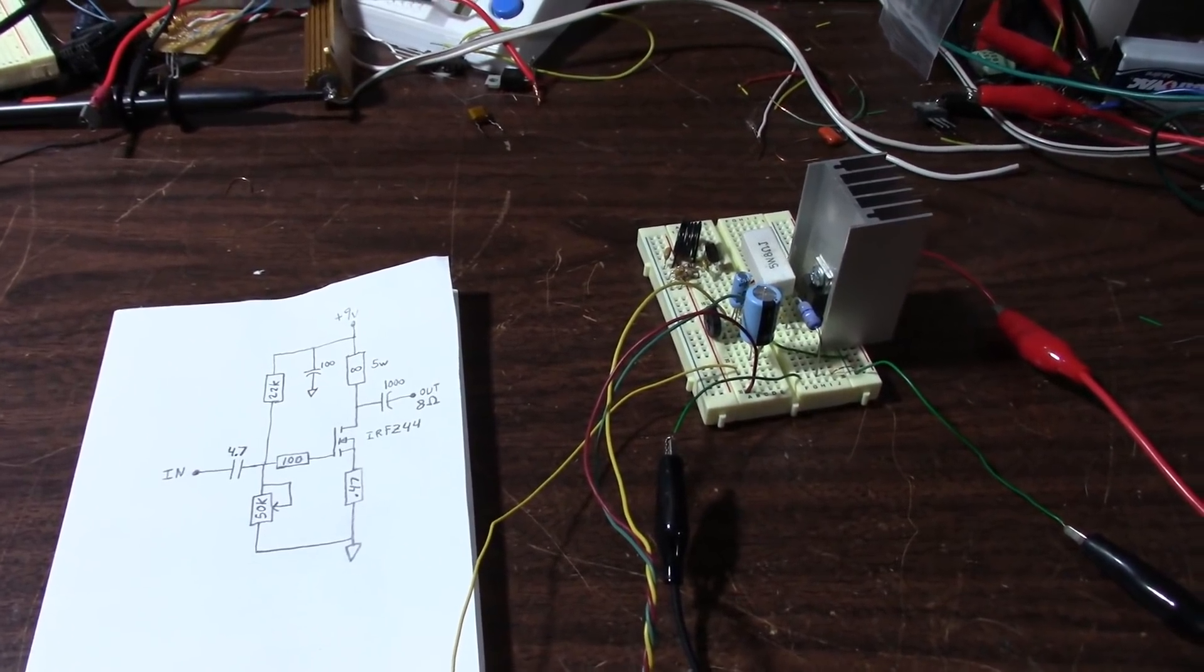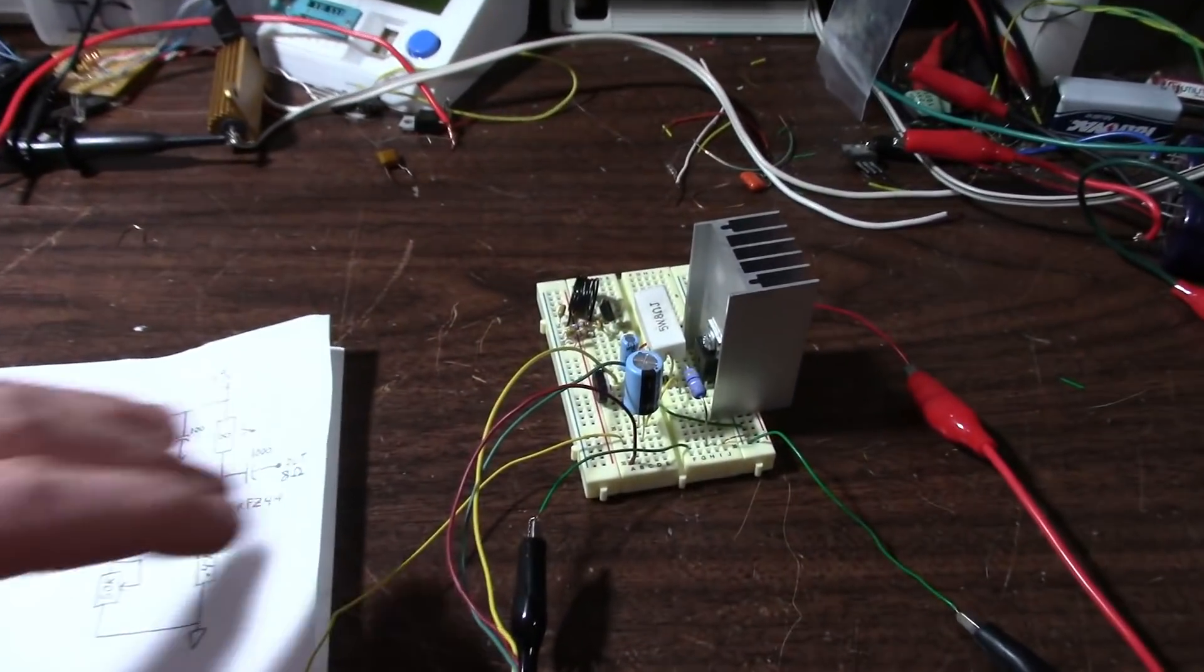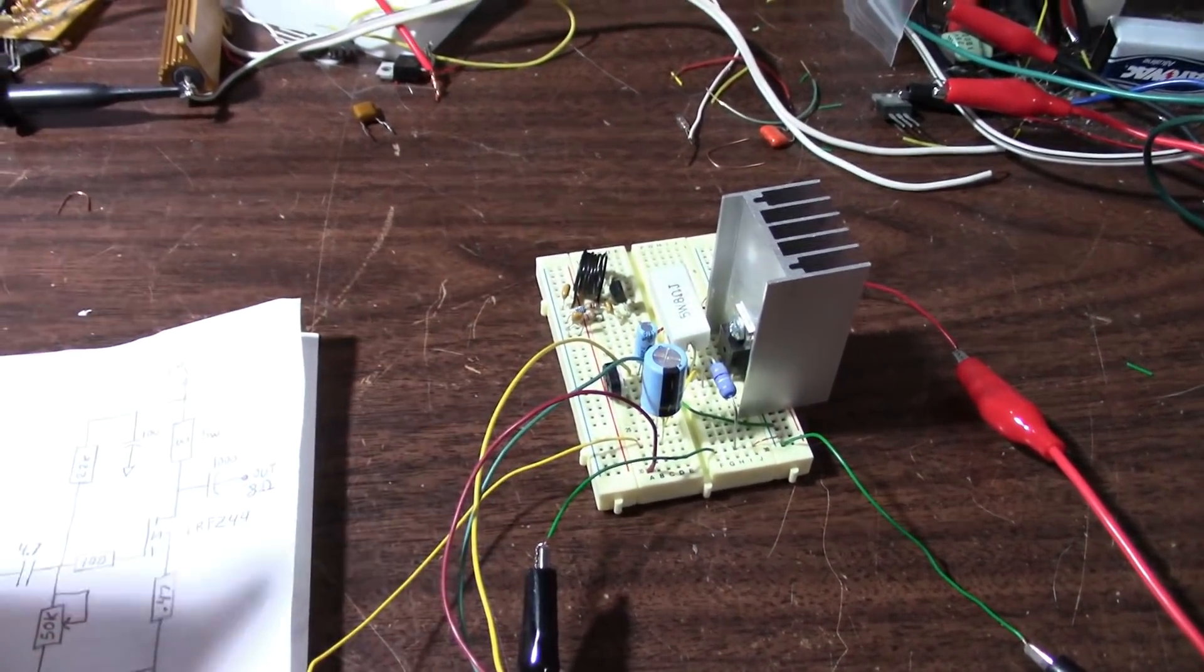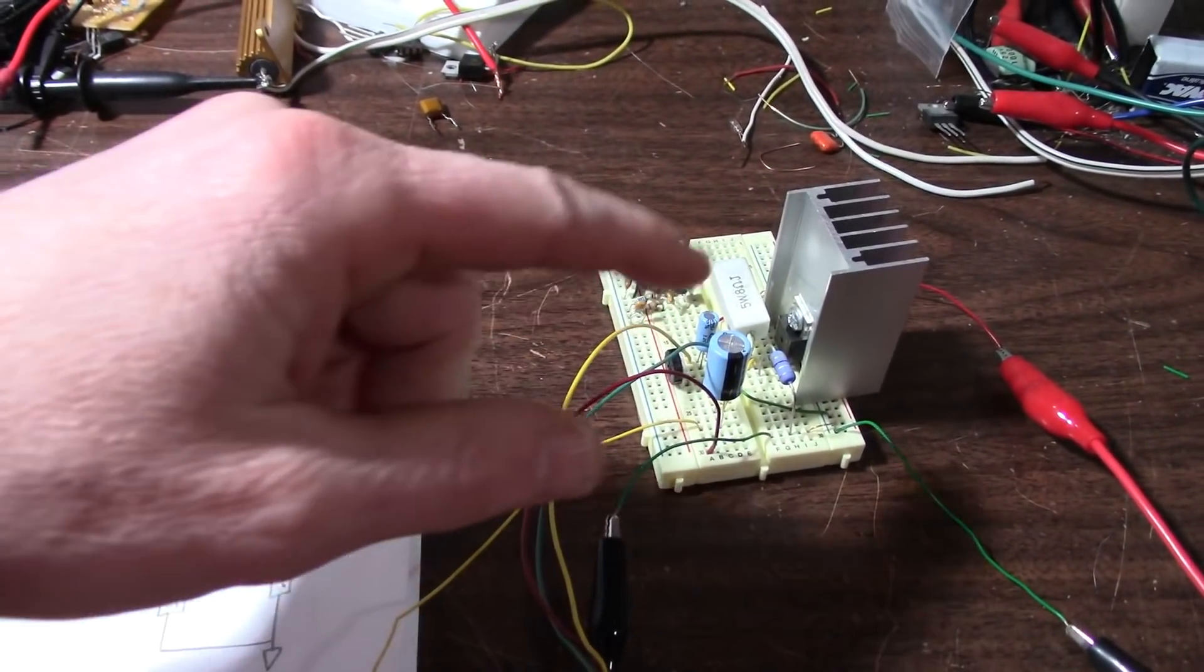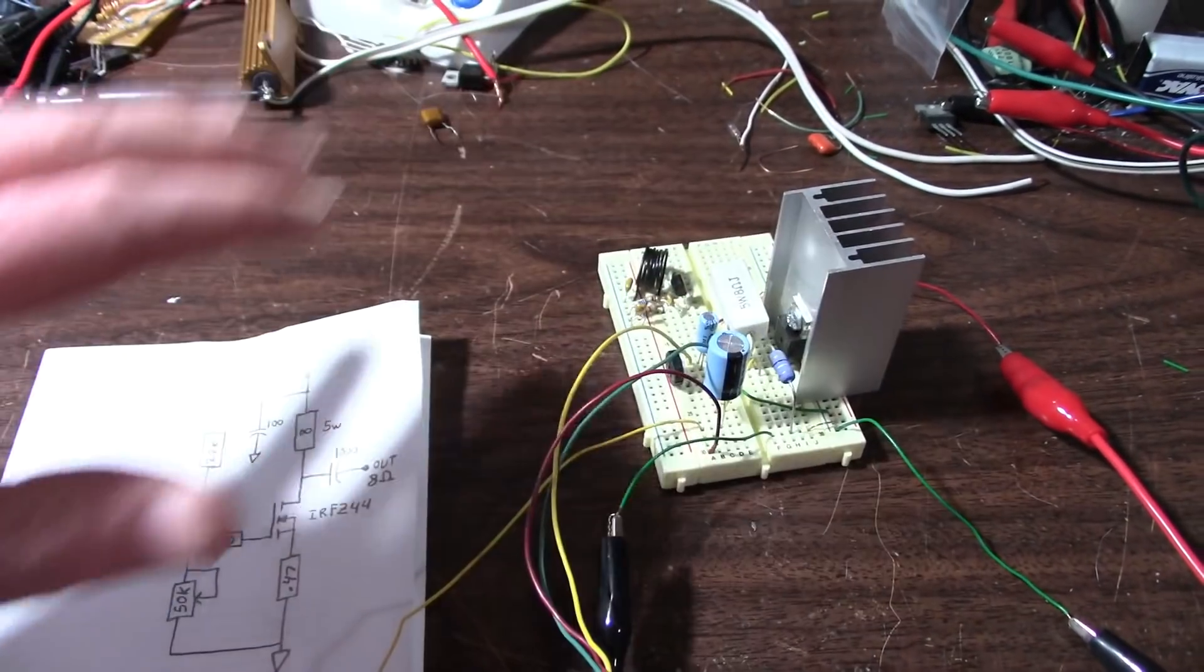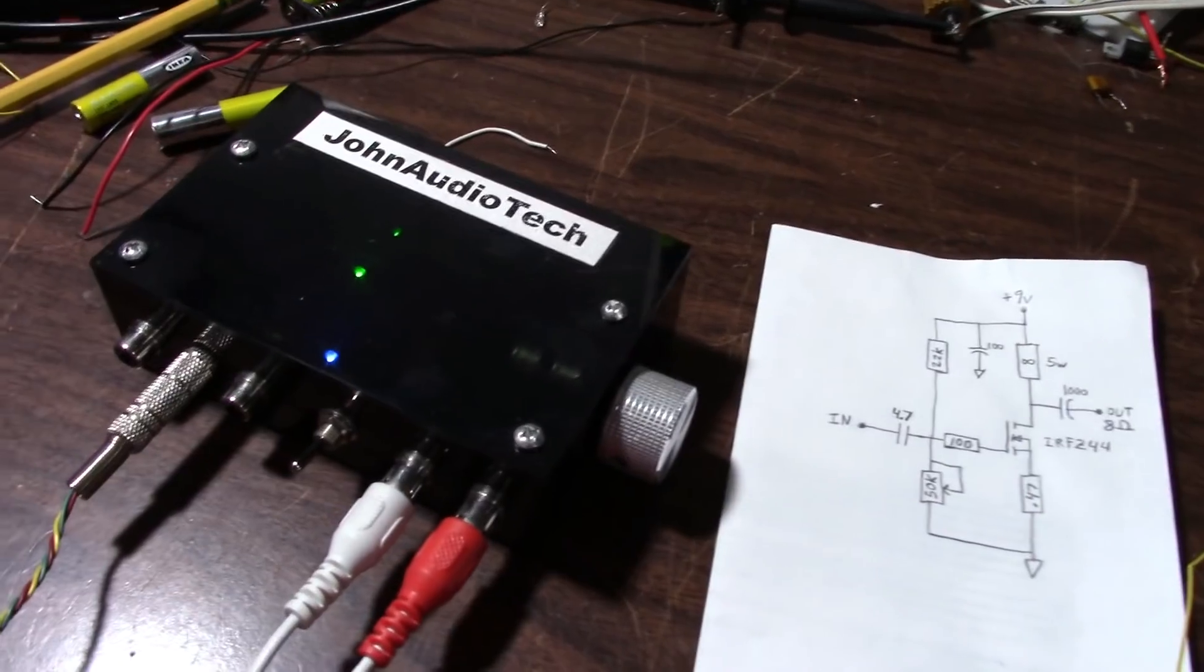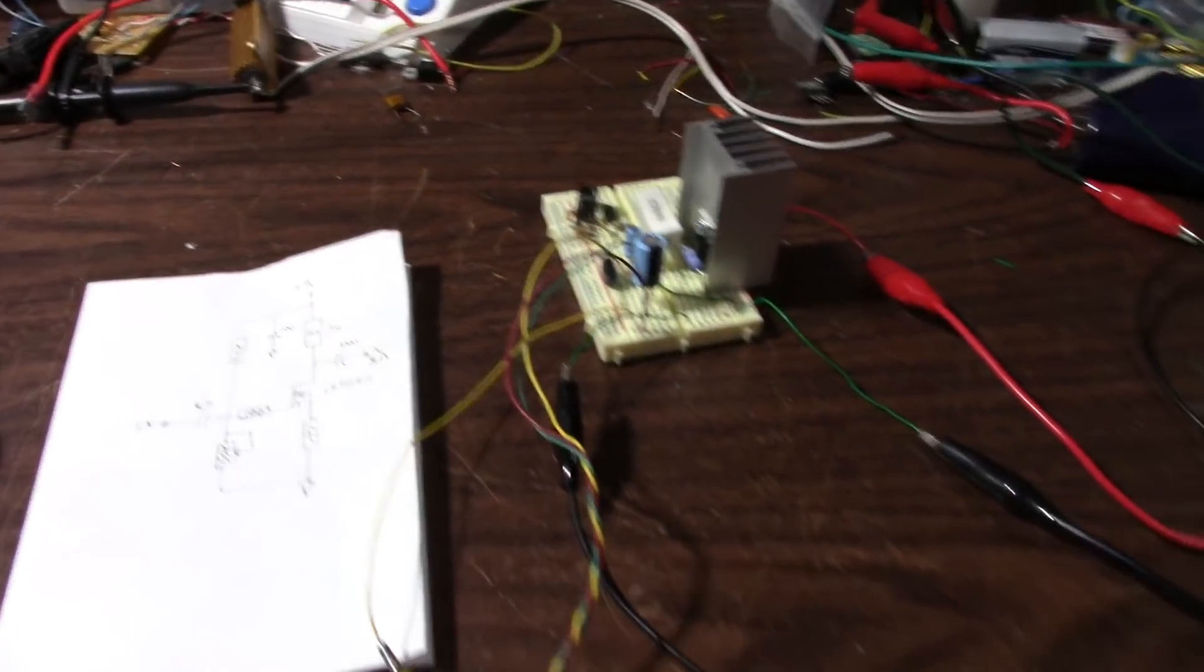So now let's do a listening test. I have a music source connected to the preamp. Now these little amplifiers don't have a lot of gain. A MOSFET is what's known as a transconductance device, meaning a voltage is controlling a current. And it takes a fairly wide change in voltage to make a wide change in current. But we'll check the amplification later. The output from my preamp should have enough level to drive the amplifier.